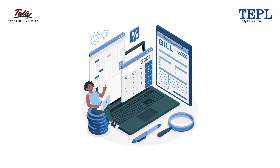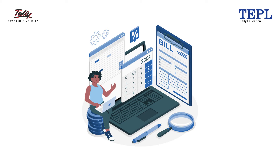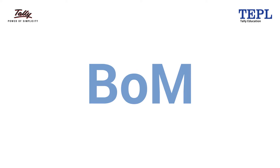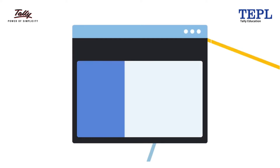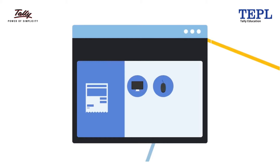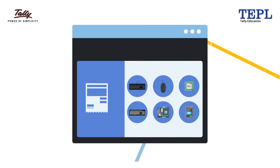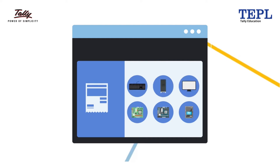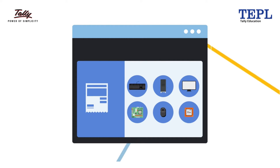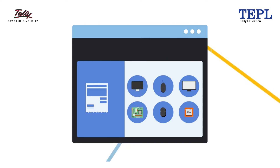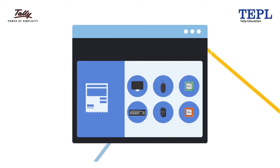In this session we will learn how to create and use Bill of Materials, commonly known as BOM, in manufacturing of finished goods. Bill of Materials is a comprehensive list of raw materials, components, parts, or anything which is required to manufacture a finished product, detailing the quantity of each component required to produce the finished goods.